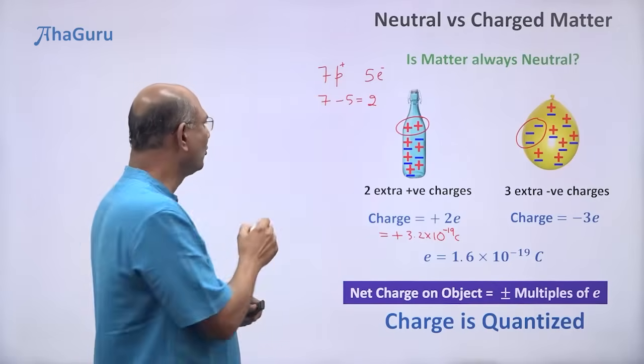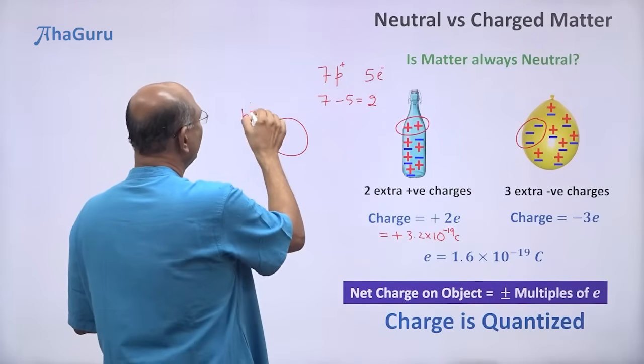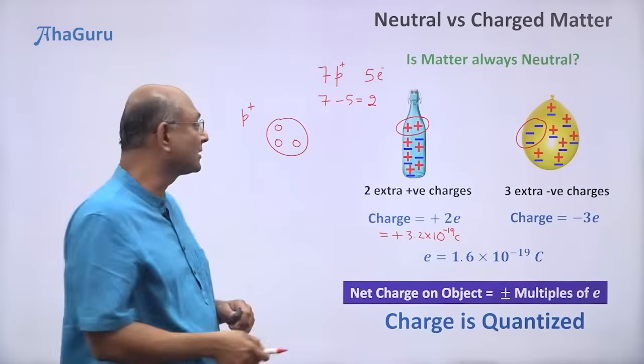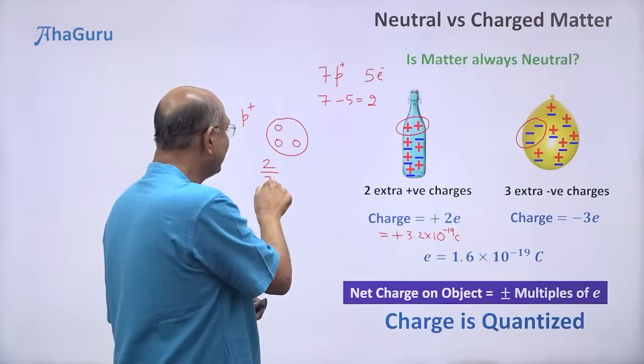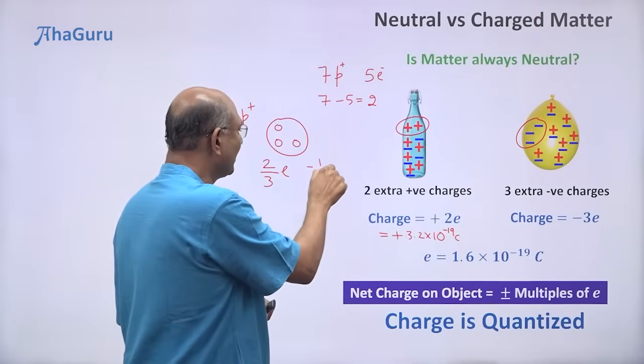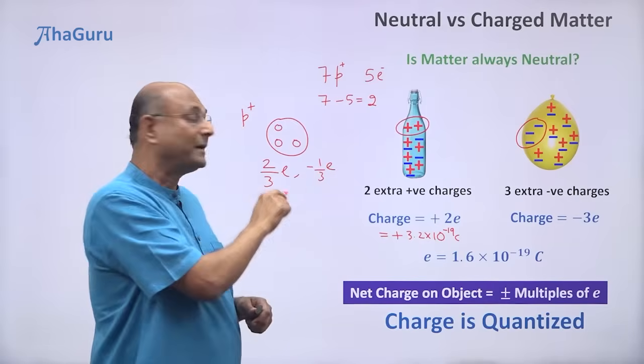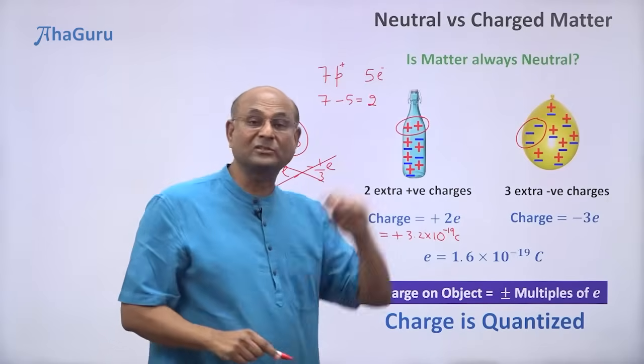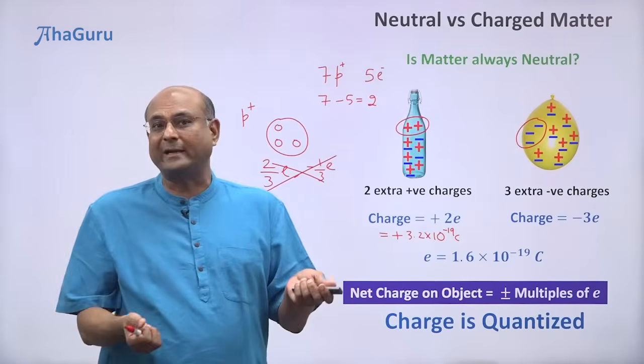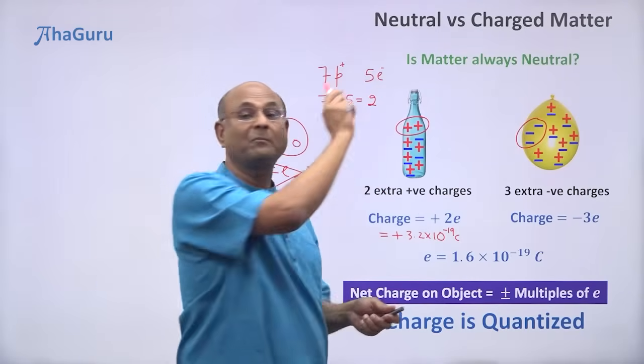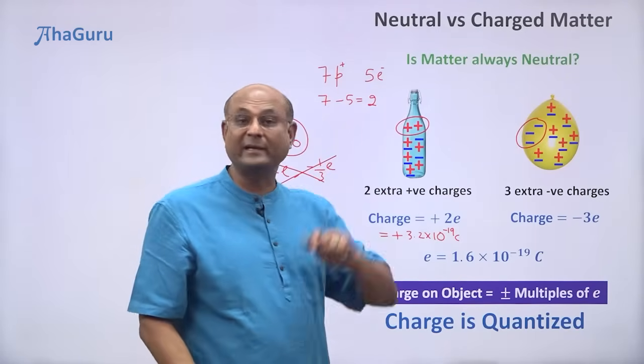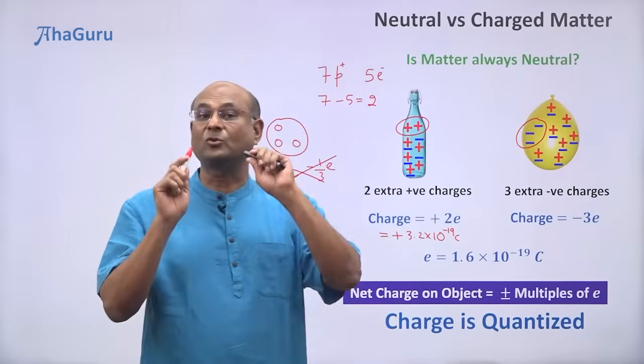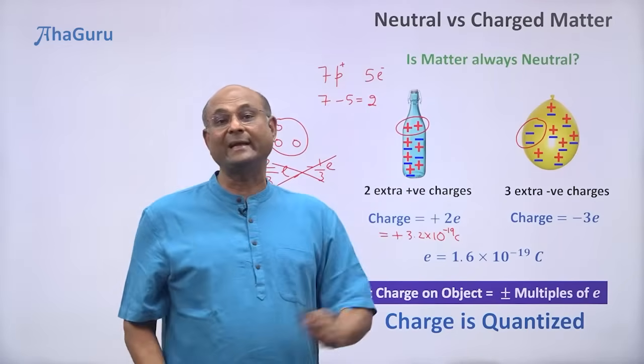Some of you might know that a proton is made up of three quarks. A neutron is similarly made up of three quarks. And these quarks have charge 2/3 E, minus 1/3 E and so on. But you will never find quarks separately outside. So you will never get this as the charge of any material. Because quarks cannot be separated. So you will always find that you have an integer number of protons extra or an integer number of electrons extra. So charge is quantized in multiples of E. So always the charge has to be plus or minus N times E.